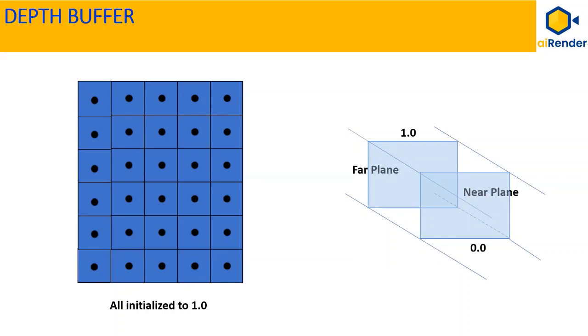Before you receive any objects to render, all values in the depth buffer are initialized to 1, setting them as farthest in the scene.